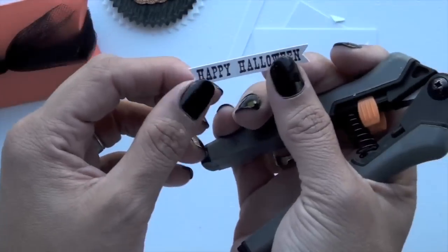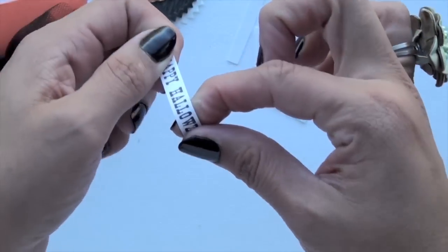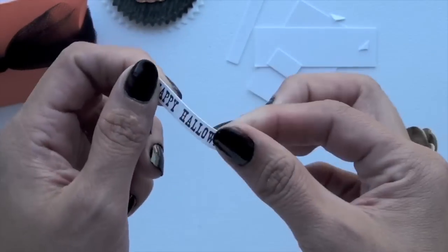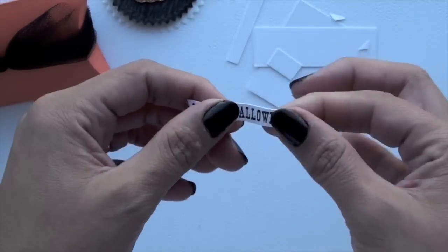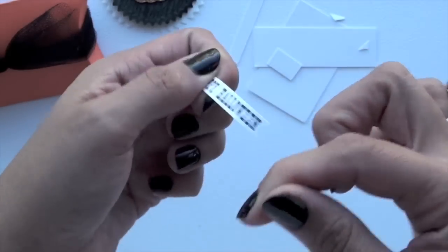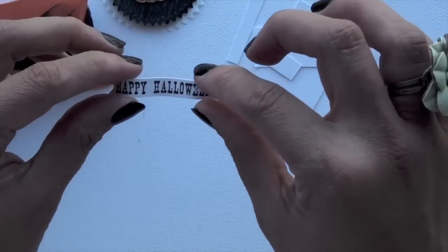And then to kind of give it a little bit of a feel, I just hold it between my fingers, hold it one side and then just bring it down. And as I'm doing this, I'm kind of wrapping around my fingers to kind of give it some motion. And I do this a couple of times until I'm satisfied with how it looks.